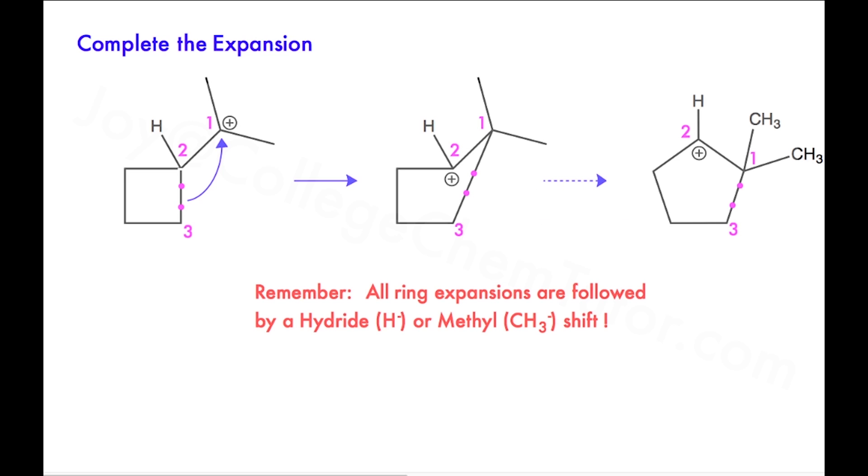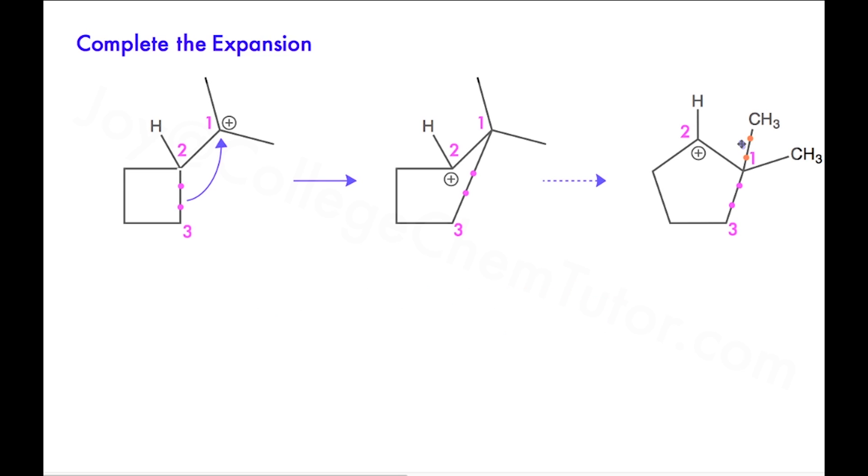Now, this next part is extremely important because all ring expansions are followed by a hydride shift or a methyl shift. In this example, we have a methyl shift, and I've drawn the mechanism arrow in blue. The reason why we have a methyl shift is because we have a secondary carbocation that is adjacent to a quaternary carbon.